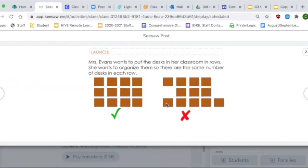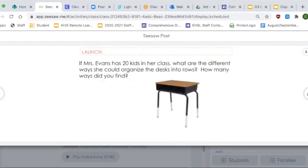This example has the red X because you'll notice that one row does not have as many desks as another row, and one row has more desks than the other row. That's not what she's looking for in this problem. She wants them to have the same number in each row. If she has 20 kids in her class, what are all the different ways she could organize the desks into rows?